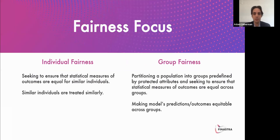There are many definitions that focus on individual fairness or group fairness. Individual fairness focuses on ensuring that statistical measures of outcomes are equal or similar for individuals — similar individuals should be treated similarly. If you and I are very similar and we apply for a loan, then we should have a similar outcome. Group fairness partitions a population into predefined groups by sensitive or protected attributes, for example race, ethnicity, gender, and seeks to ensure that statistical measures of outcomes are equal across groups. Model predictions should be equitable across the different groups — one gender should not be favored over another.